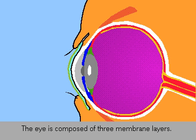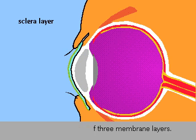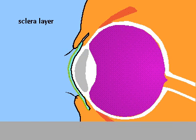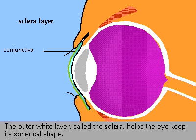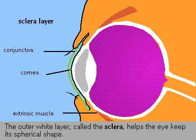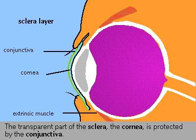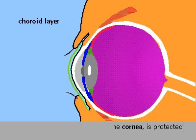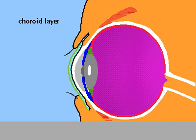The envelope of the eye is composed of three membrane layers. The outer white layer, the sclera, helps the eye keep its spherical shape. The transparent part of the sclera is the cornea, a kind of window to the eye and is protected by the conjunctiva.